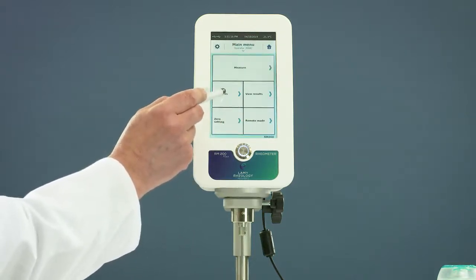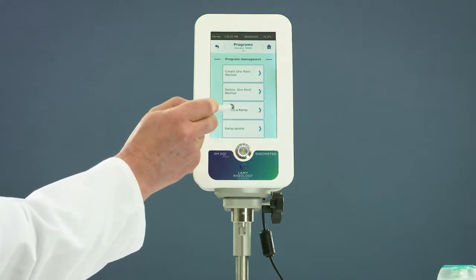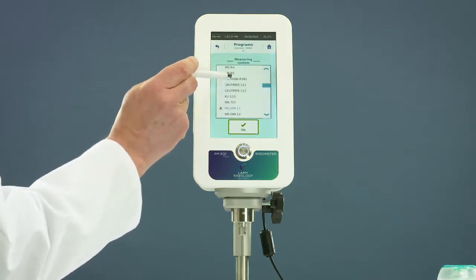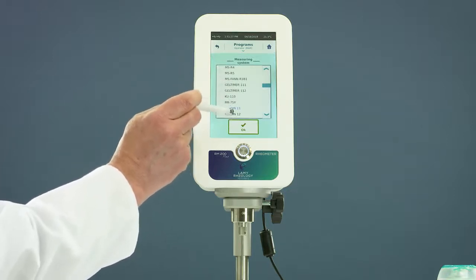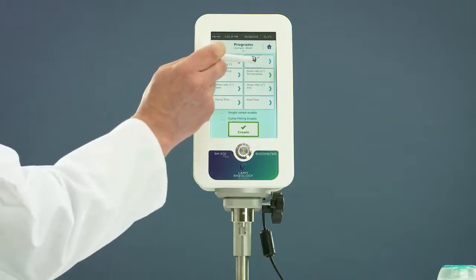Go to program menu to set a method. For the ramp, select the spindle and set the number of points.